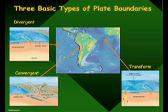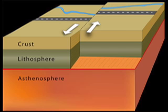Transform faults — that's like a San Andreas kind of motion, a side-by-side kind of motion, horizontal motions across the vertical fault. So we'll show you how it works.